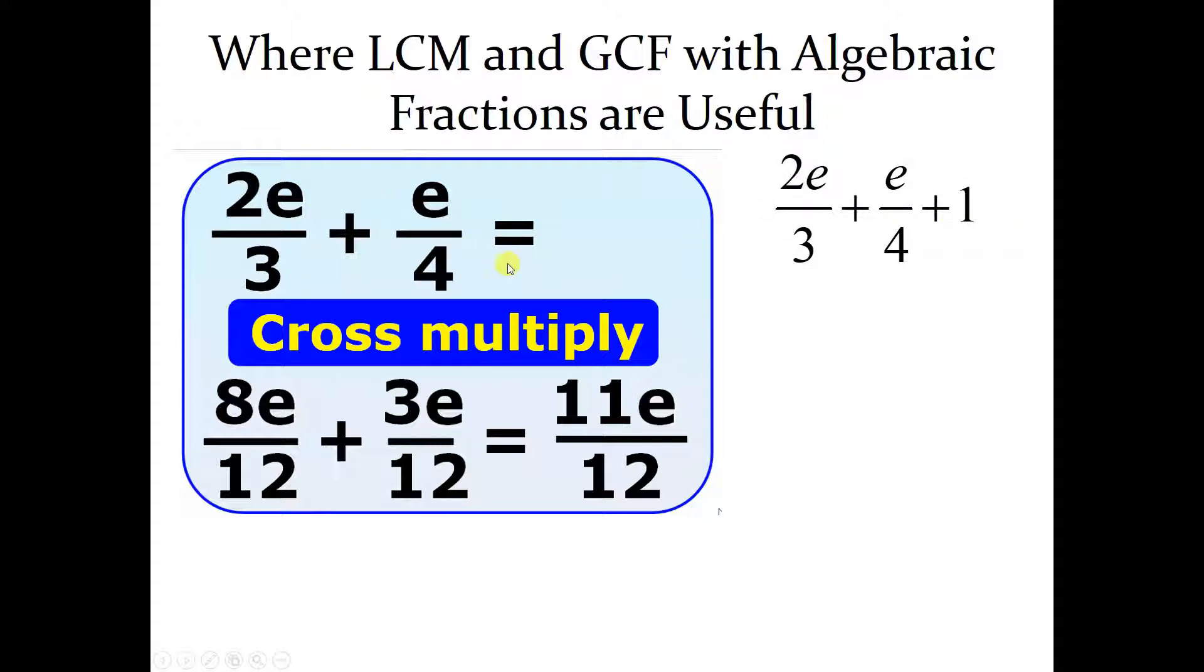You see, if this is all you know, and I were to take that same expression and just add one, you'd have no shot. The thing you've got to understand is that to get a common denominator, you need to find the lowest common multiple of the denominators.